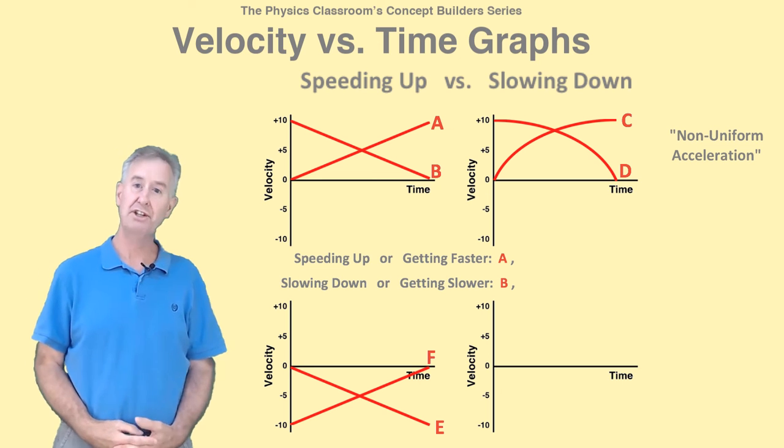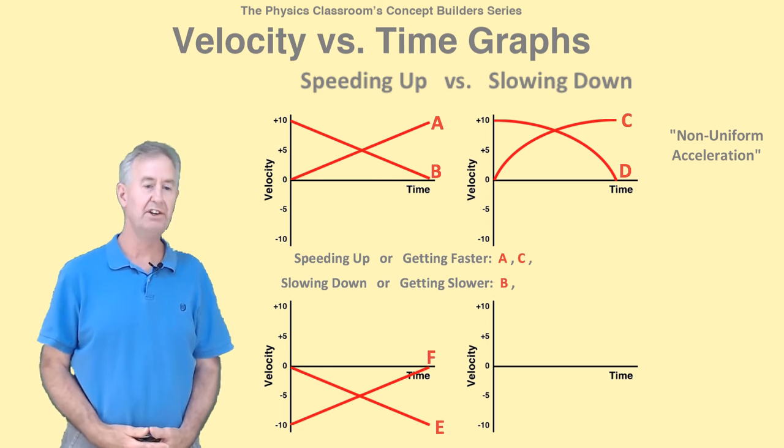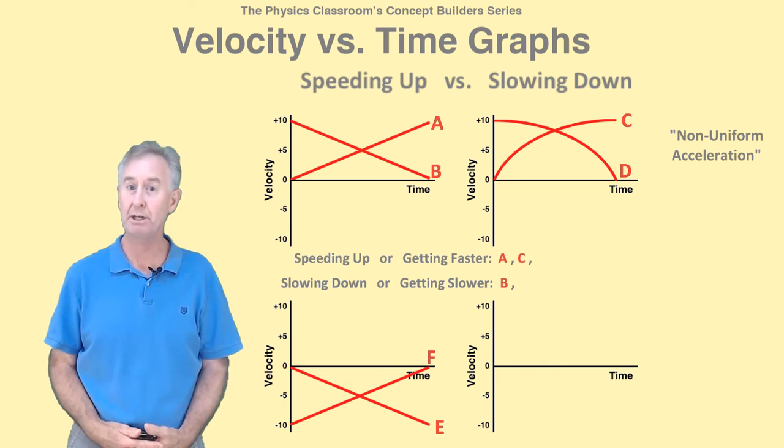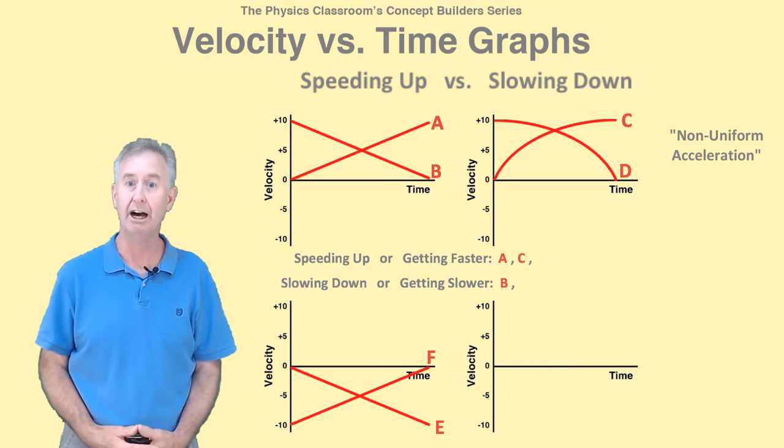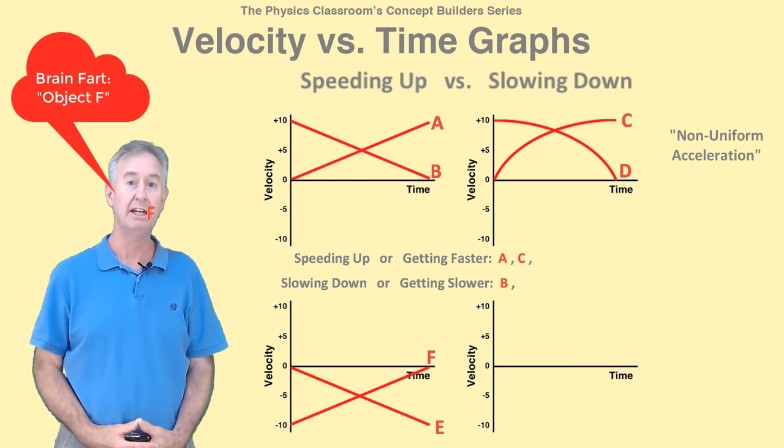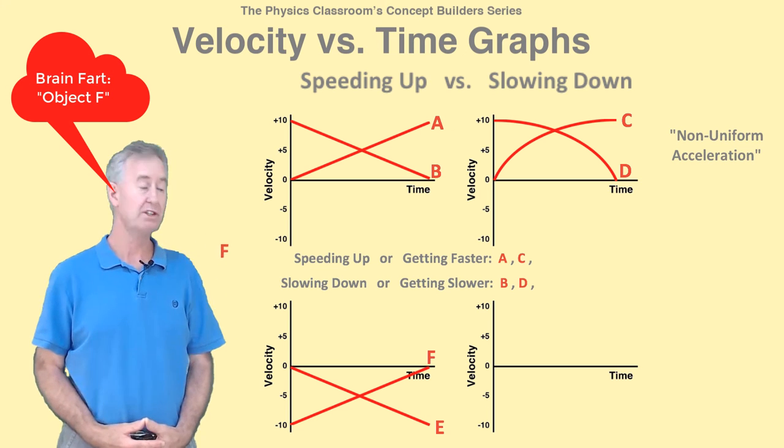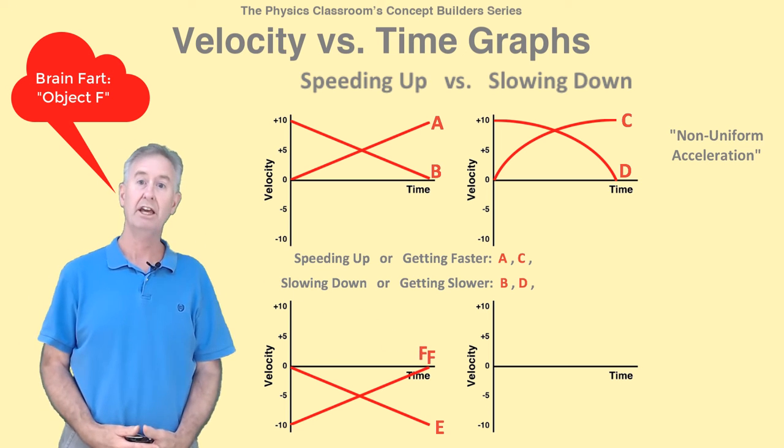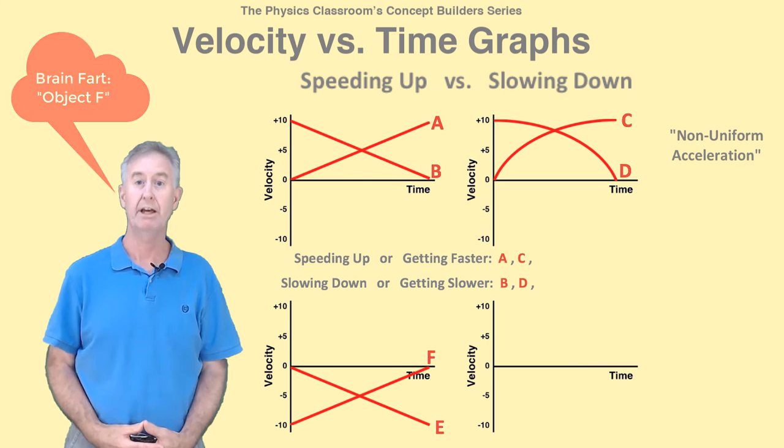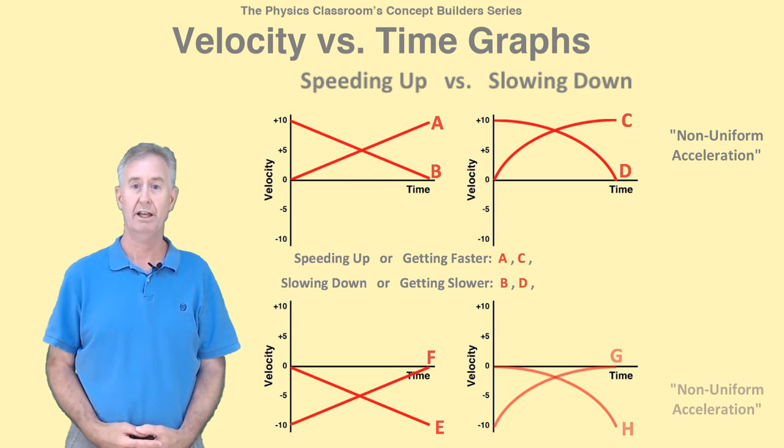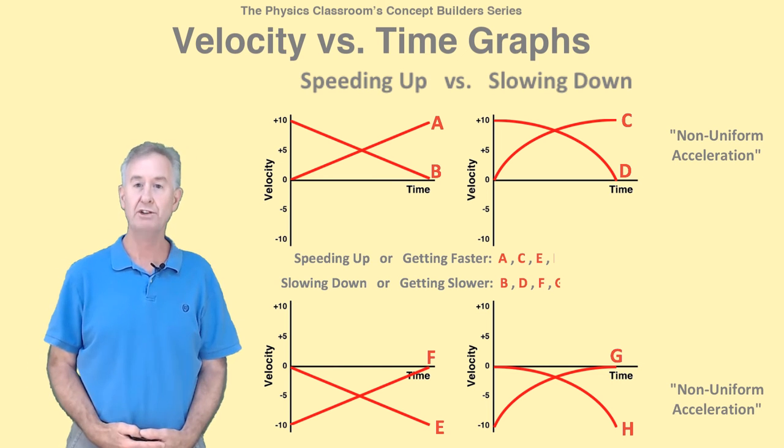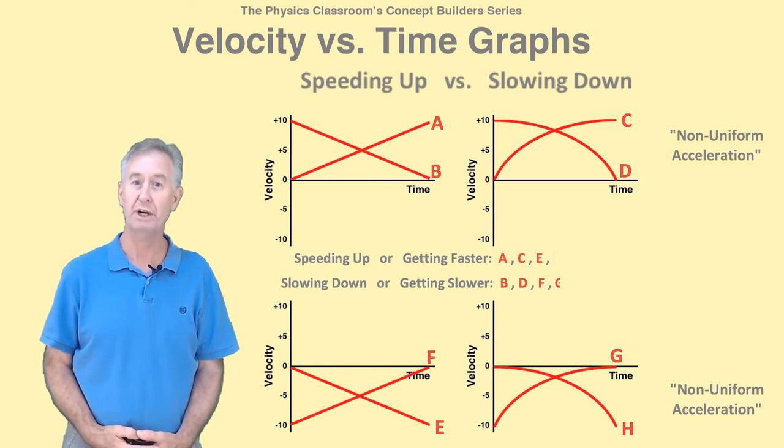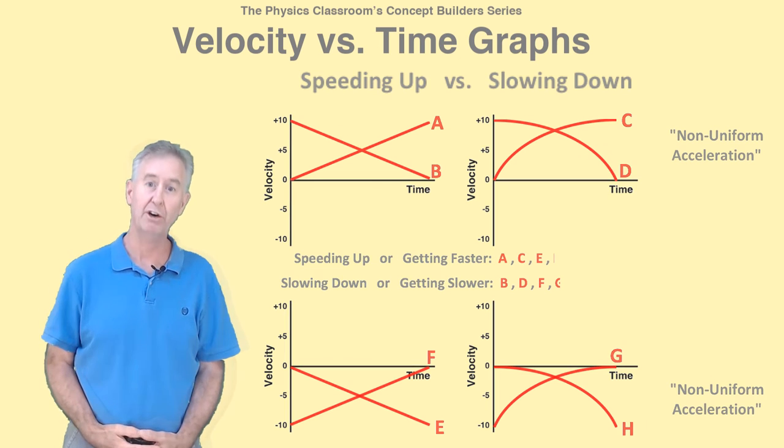object E is getting faster. It starts at rest and finishes moving at 10 meters per second in the negative direction—it is speeding up. Object D is getting slower. It starts at 10 meters per second and comes to a stop—it is a slowing down object. Objects G and H are also speeding up and slowing down, just at a varying rate.